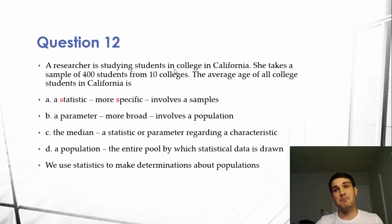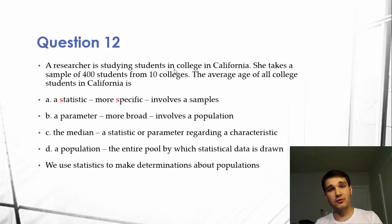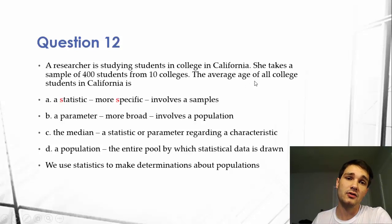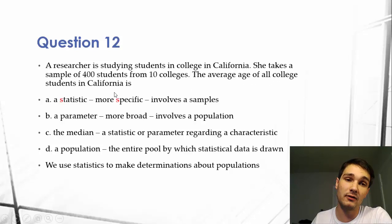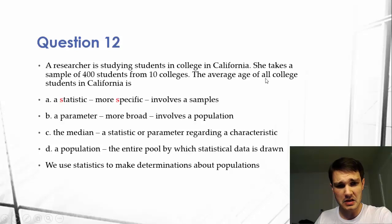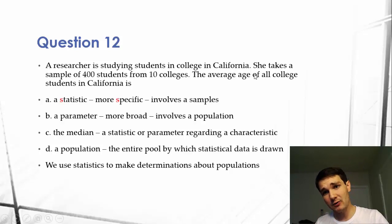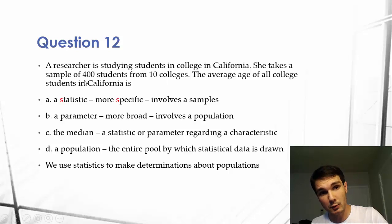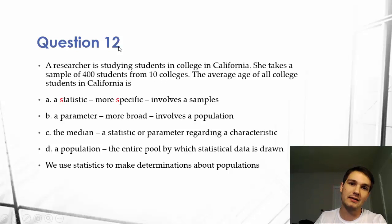It's a sample because it's a minute amount of information about a bigger population. We pull samples from larger populations. So the population here would be all college students in California. That's the population — we're pulling a select amount out of that to make an inference about the population. What we're pulling is a sample, and information about that sample would be a statistic.